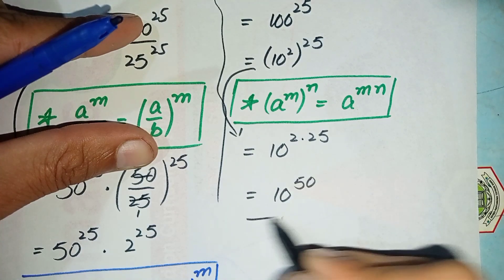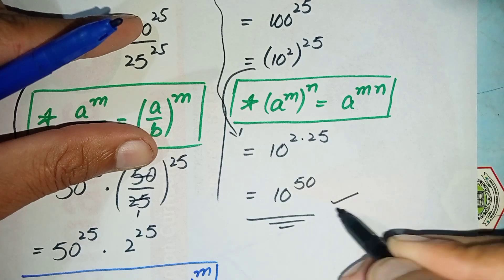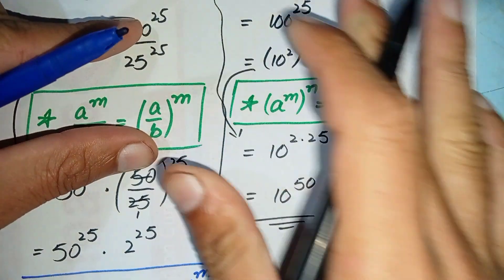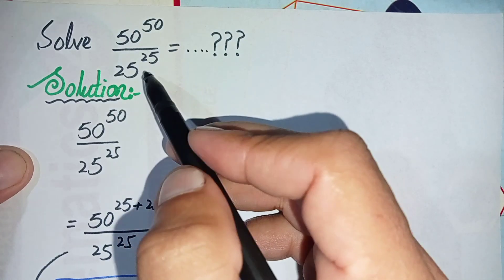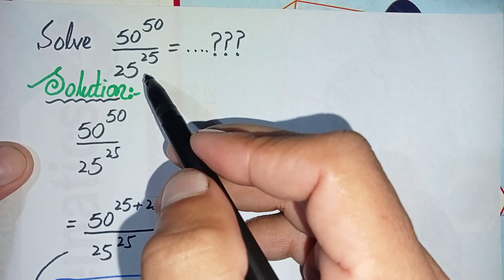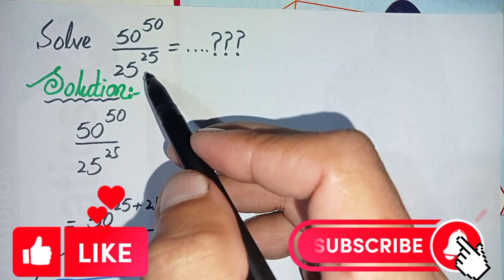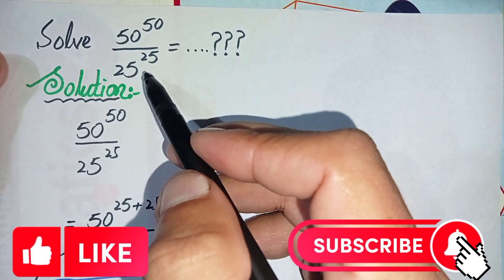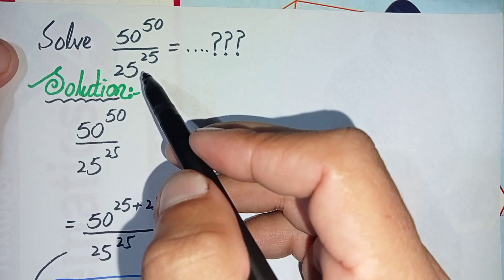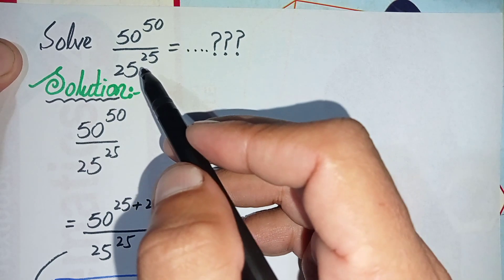So finally, 10 raised to the power 50 is the answer to this power division math problem. Don't forget to subscribe to our YouTube channel for more such videos. Thank you so much for watching — take care of yourself, see you in the next video, bye bye!